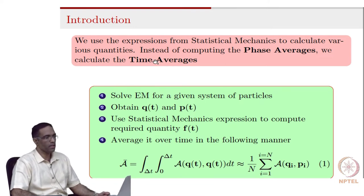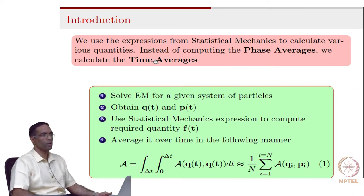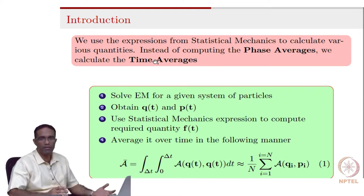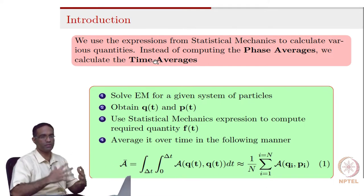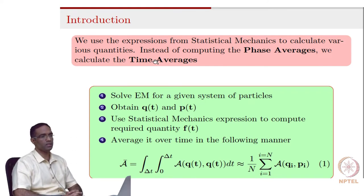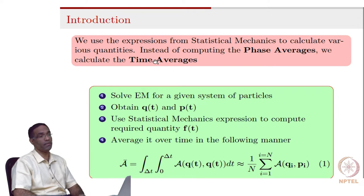Like we have been discussing, statistical mechanics expressions where various thermodynamic quantities are given in terms of the positions and momenta are known. And instead of computing the phase averages, we can actually compute time averages in molecular dynamic simulations. The essential steps are: solve the equations of motions for a given system of particles, obtain the variation of the positions and the momenta as a function of time, and then use statistical mechanics to compute the required quantities. Then you basically average it over time.